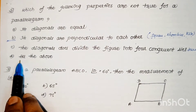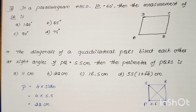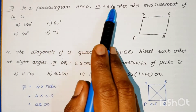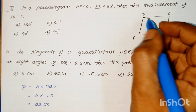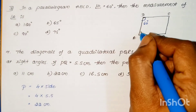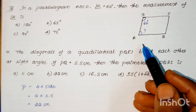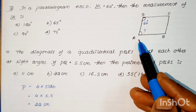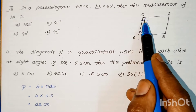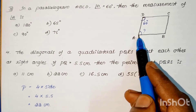Problem: In a parallelogram ABCD, angle D = 60 degrees. Find angle A. Since the sum of adjacent angles in a parallelogram equals 180 degrees, angle A + angle D = 180 degrees, so angle A = 180 − 60 = 120 degrees.